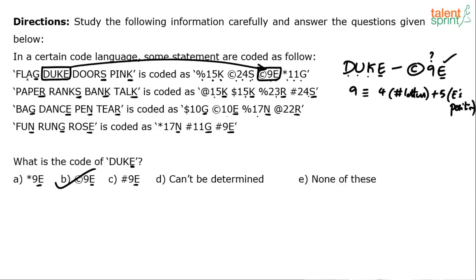You can verify for the other words. The code for flag is asterisk 11G. Flag has got 4 letters and the position of G is 7. 4 plus 7 is 11. For dance, it has 5 letters and the position of E is 5. 5 plus 5 is 10. So the code for dance should have 10 in it, and it should end with E. So dance is coded as copyright 10E.